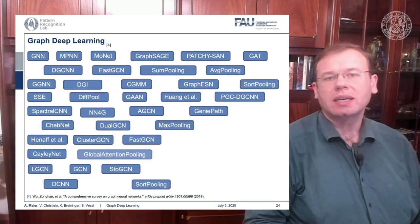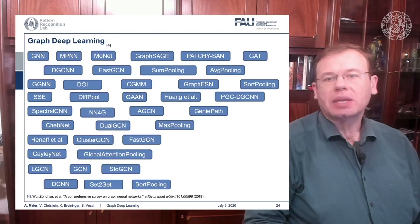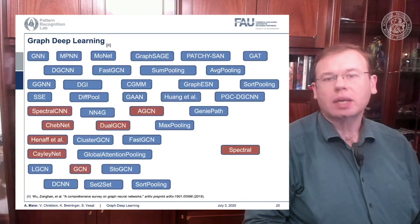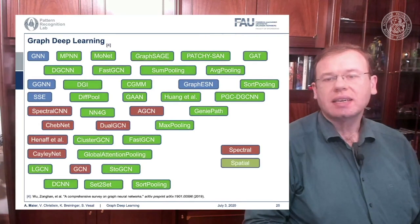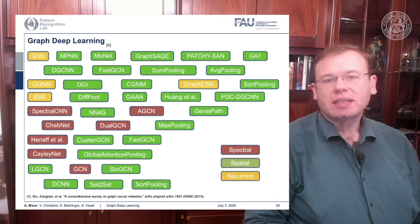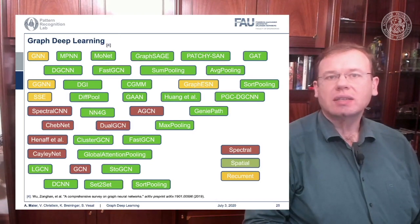You already see there's a broad variety of aggregators, and this is the reason why there's so many different graph deep learning approaches. But you can subdivide them into certain kinds: spectral ones, spatial ones, and recurrent ones. This is essentially the key to how you can tackle graph convolutional neural networks.